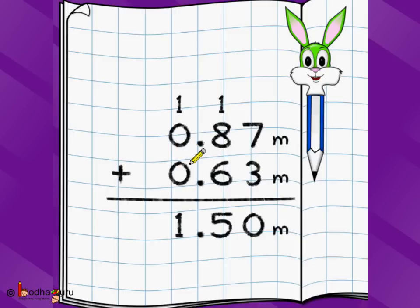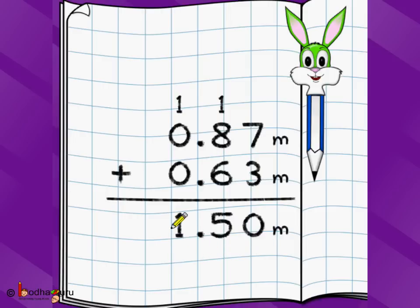The same rules of carryover apply just like a three-digit problem — the only thing is there is a decimal in between. When you read the result, you read it as 1.50 meters, or in other words, 1 meter and 50 centimeters, because 0.50 meters is nothing but 50 centimeters.